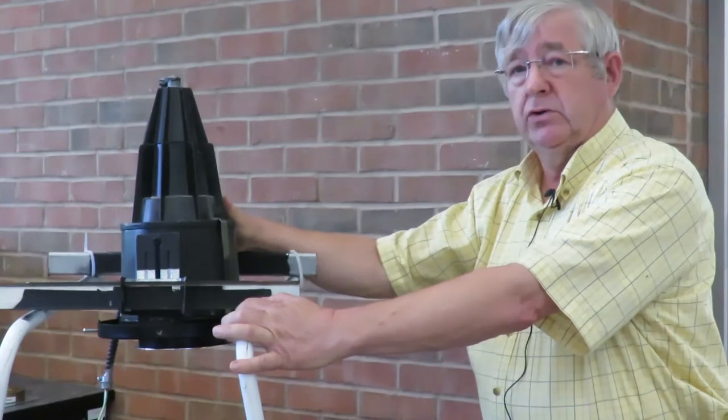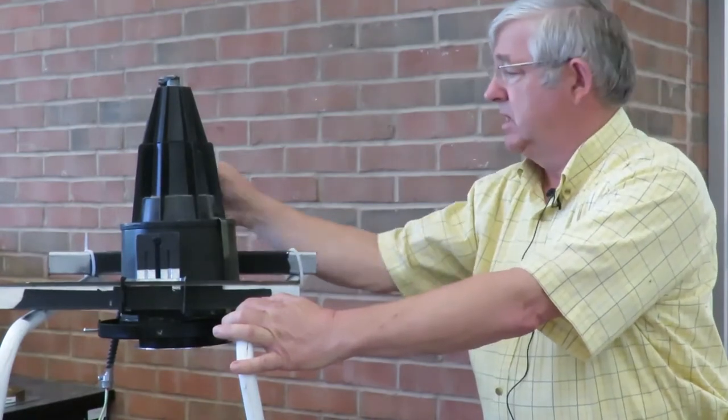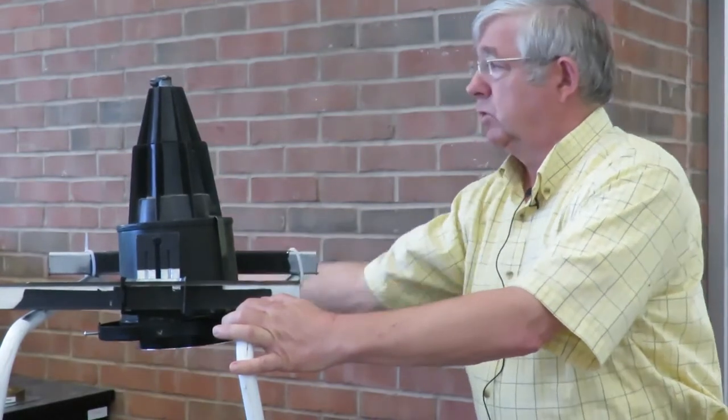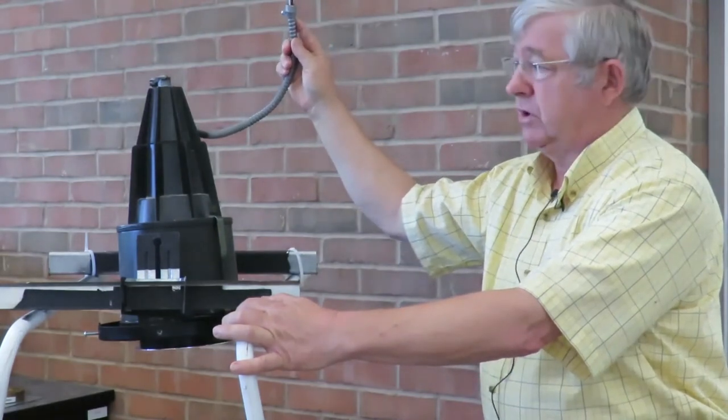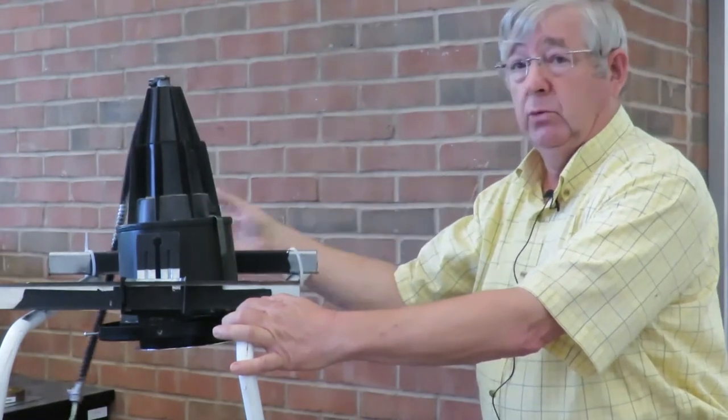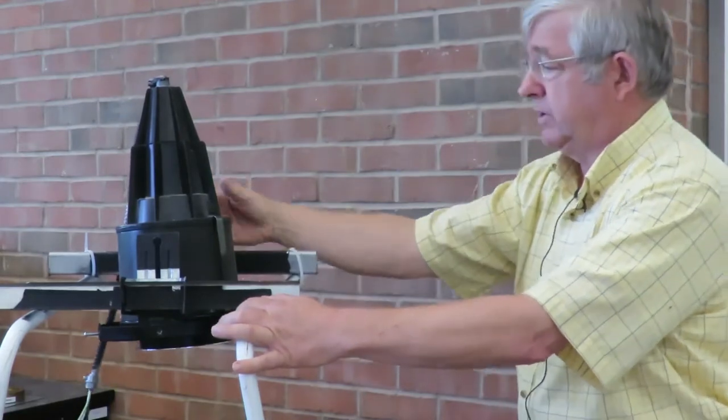So the first thing we're going to do is turn off the power. Second, we're going to disconnect the BX cable from the junction box and now we're ready to disassemble the Rambush fixture.